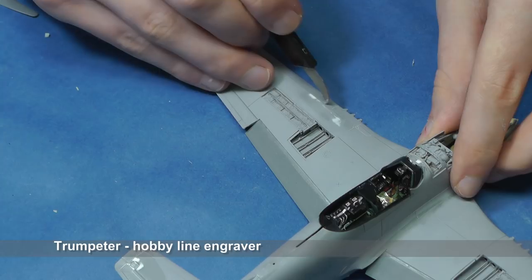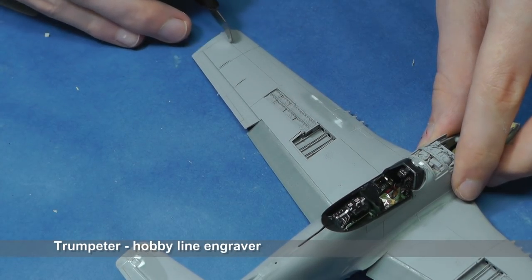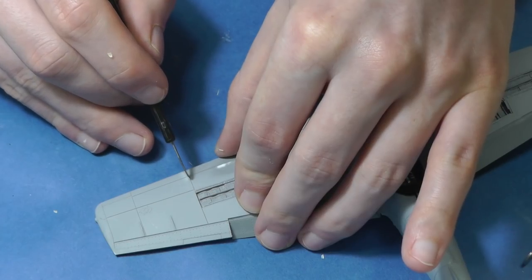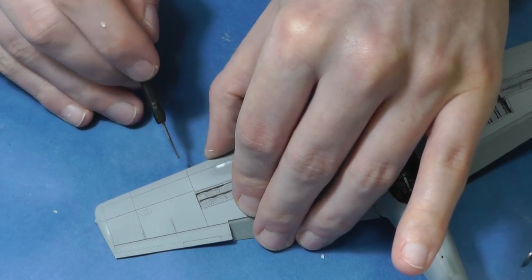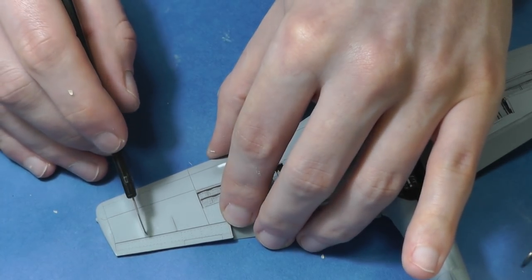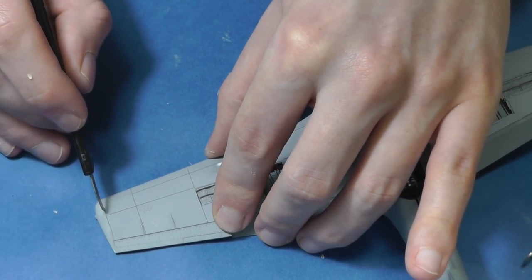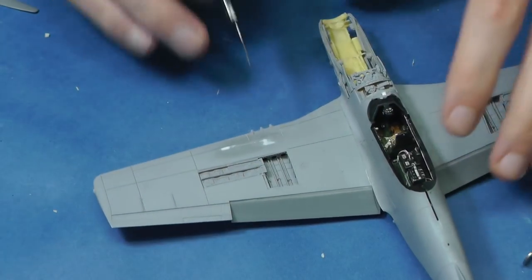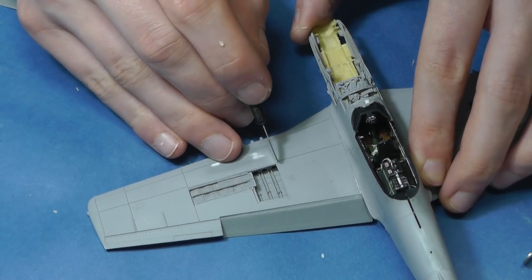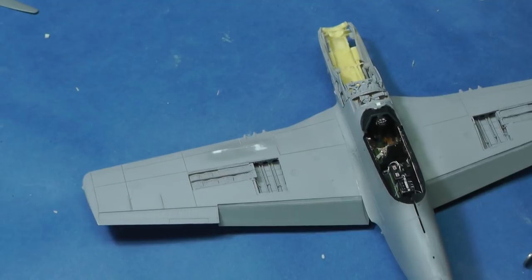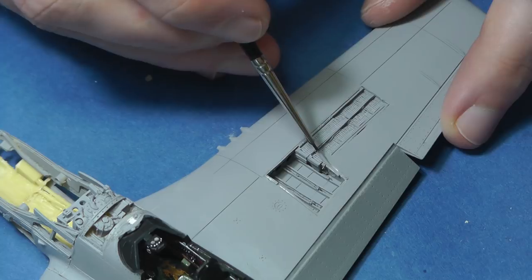I rescribed panel lines with hobby line engraver. Now I am going to make rivets on the whole model. Rivets on the Mustang - on the original plane, rivets were covered with putty so it was perfectly flat. So why did I do that?